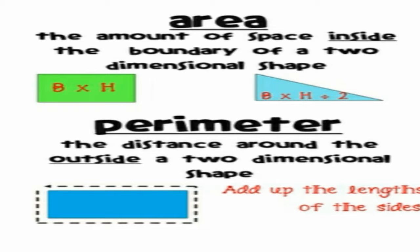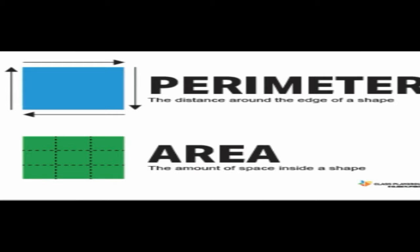And perimeter: the distance around the figure. After the outer side — whatever sides any figure has — the sum of those sides will be the perimeter. So between these two features there is a difference, as shown on the screen.